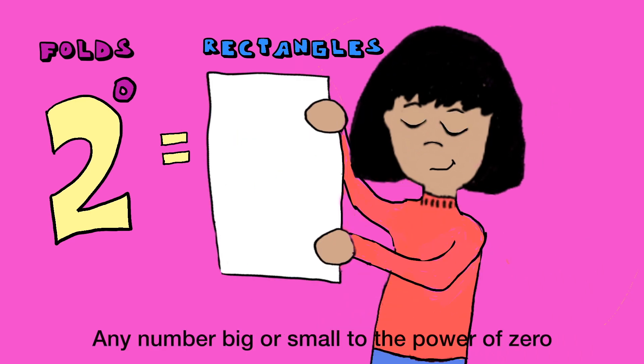Any number, big or small, to the power of zero isn't none. There's one.